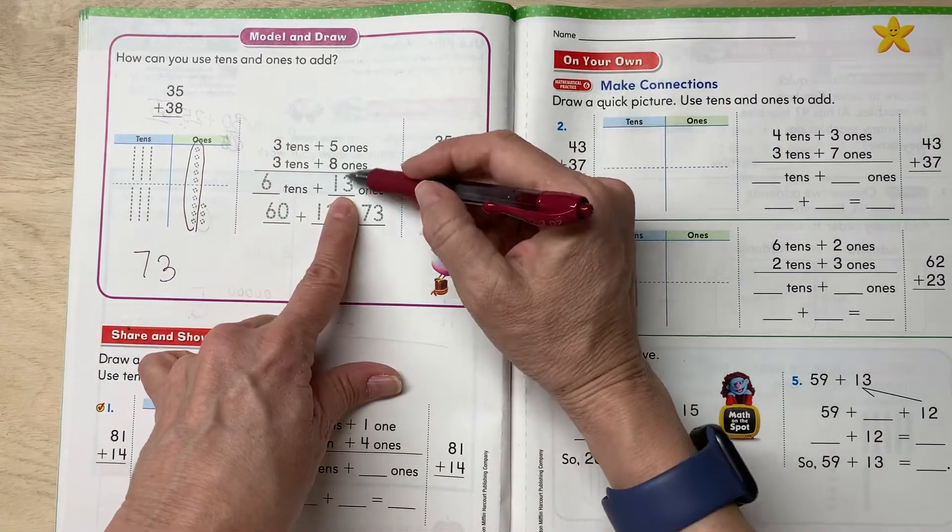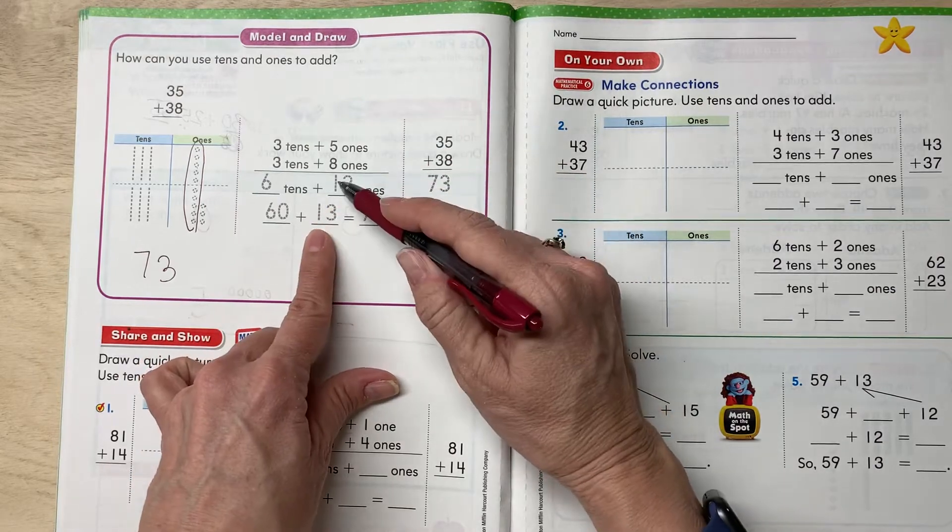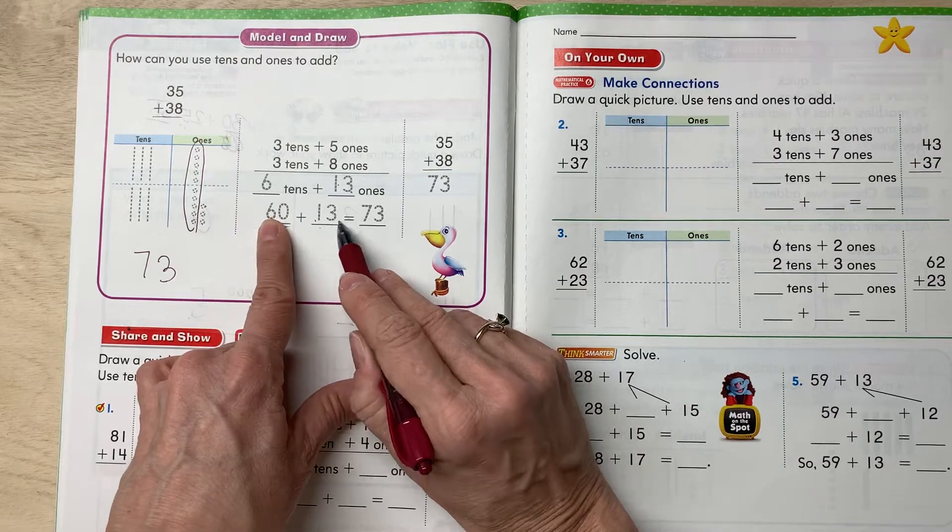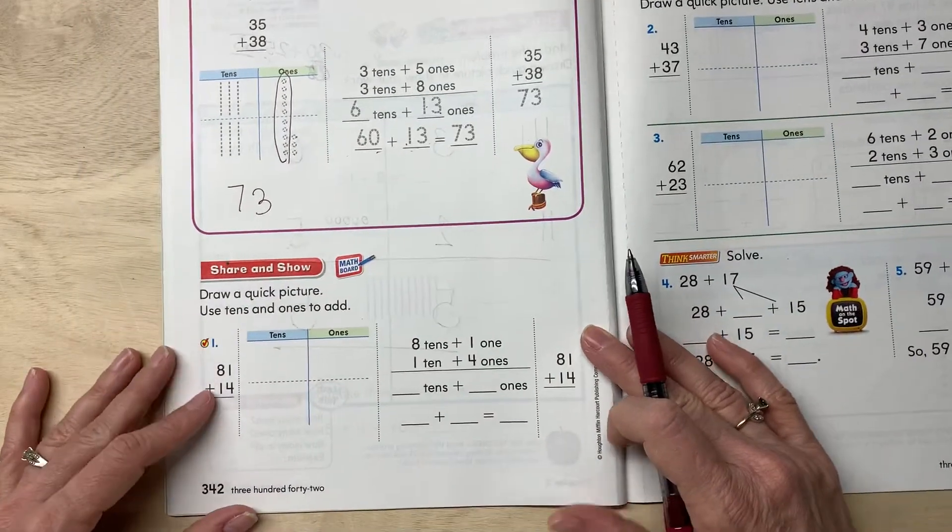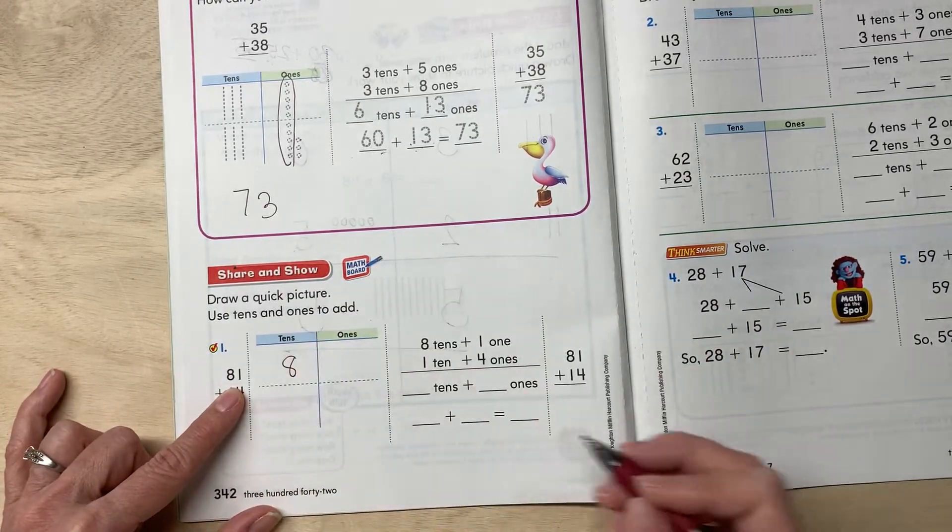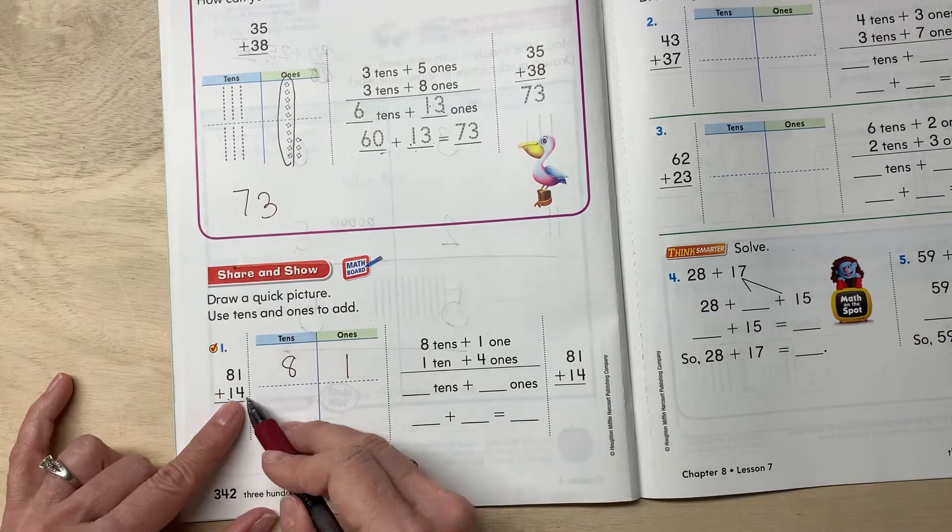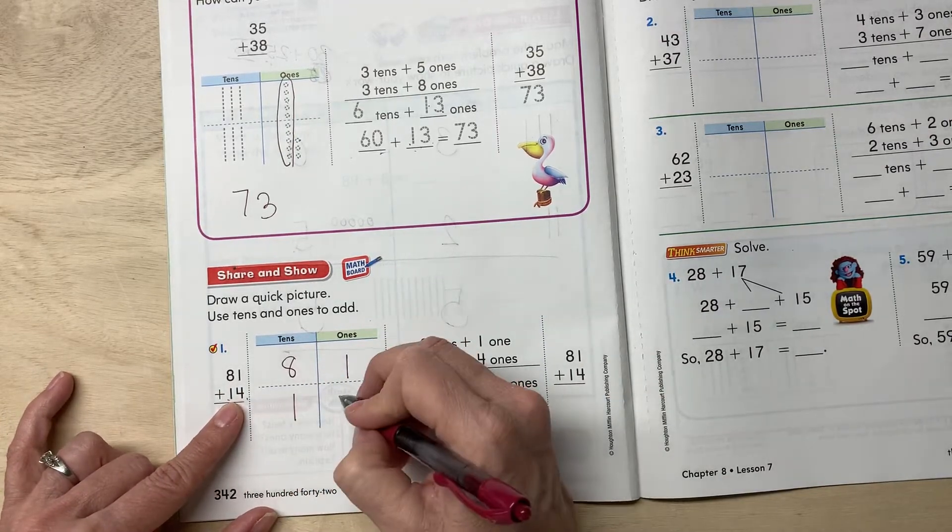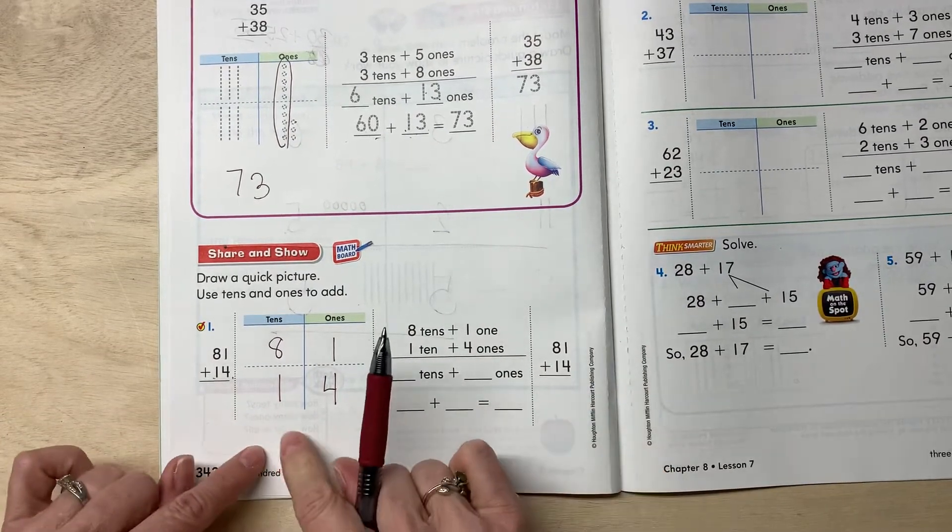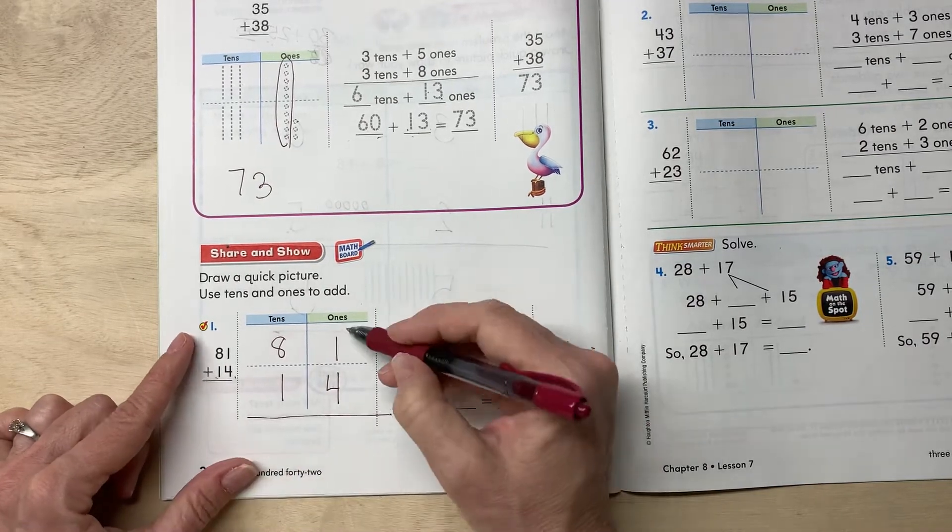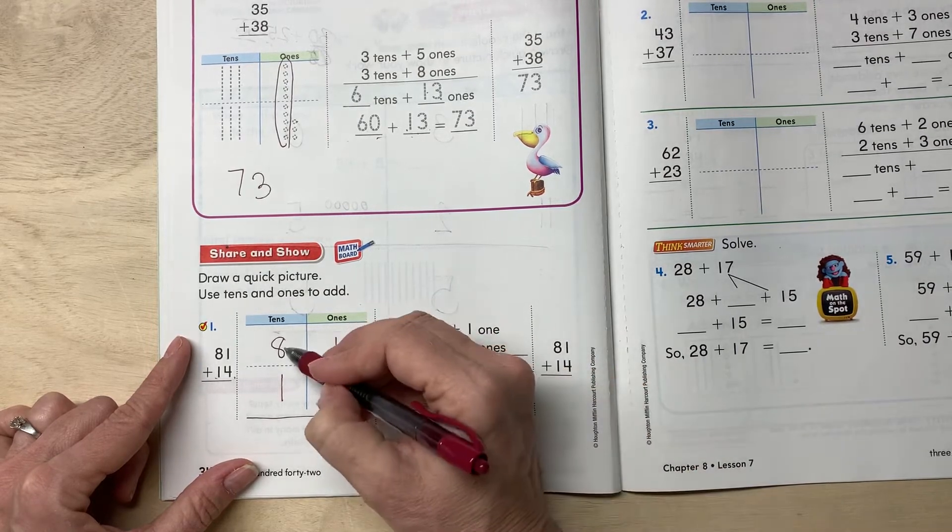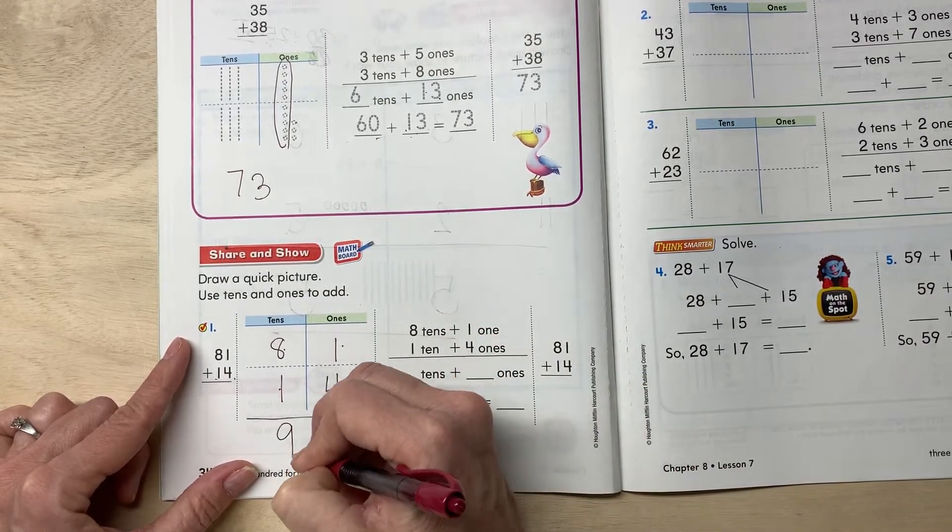Six tens and 13 ones. You can move that ten over, to make it 60 plus 13 or 60, 73. Let's do some more practice down here. So 81 is eight tens and one one, and 14 is one ten and four ones. There's a lot of steps over here. Do not worry about that. I just want you to be able to get this strategy. So draw your line. One, one plus four ones is five ones. Eight ones plus one one is nine ones.